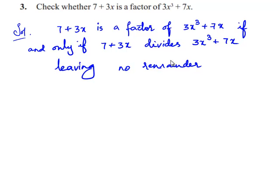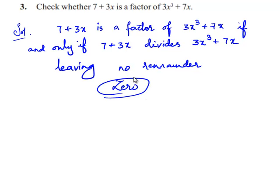That means, when 7 plus 3x is divided by 3x³ plus 7x, the remainder must be 0. So, if the remainder is 0, we can say that 7 plus 3x is a factor of 3x³ plus 7x.